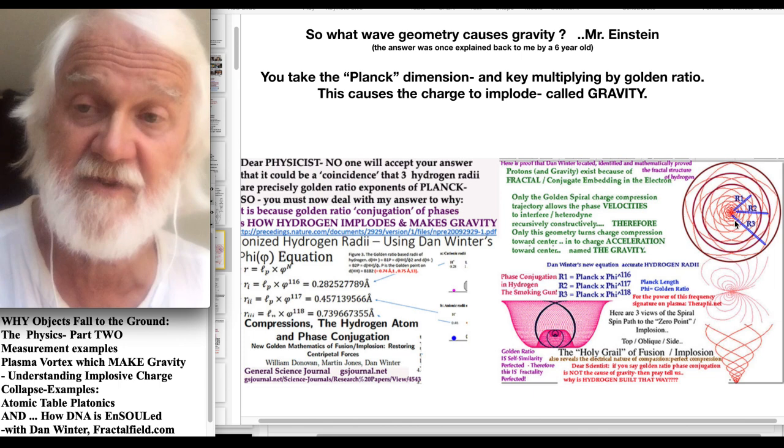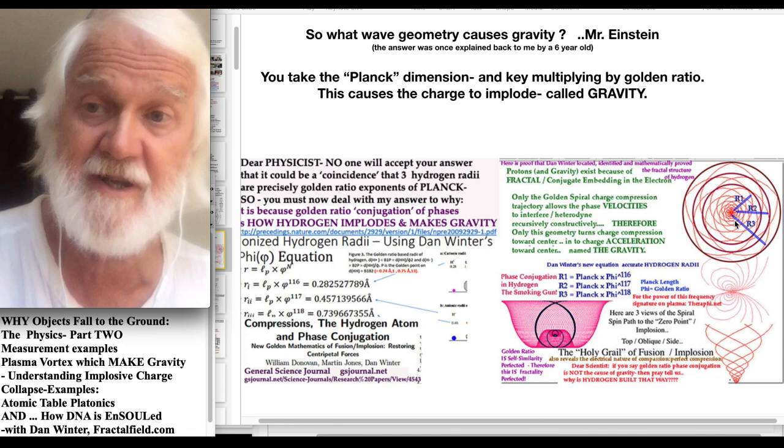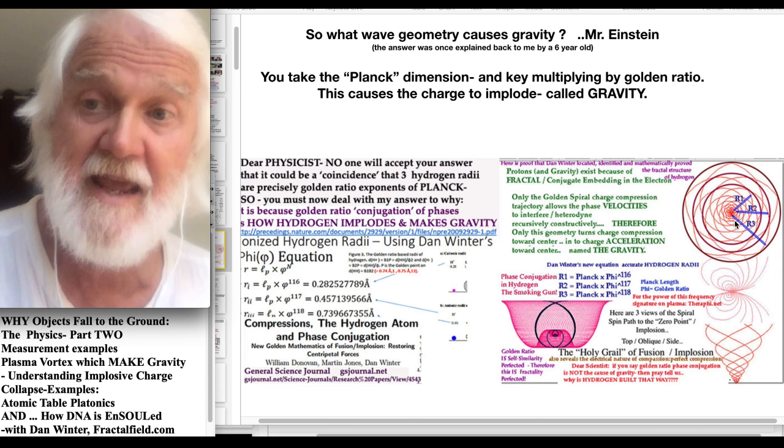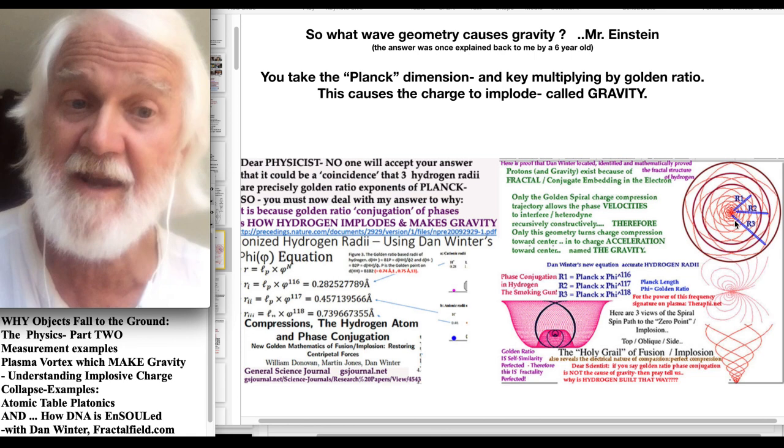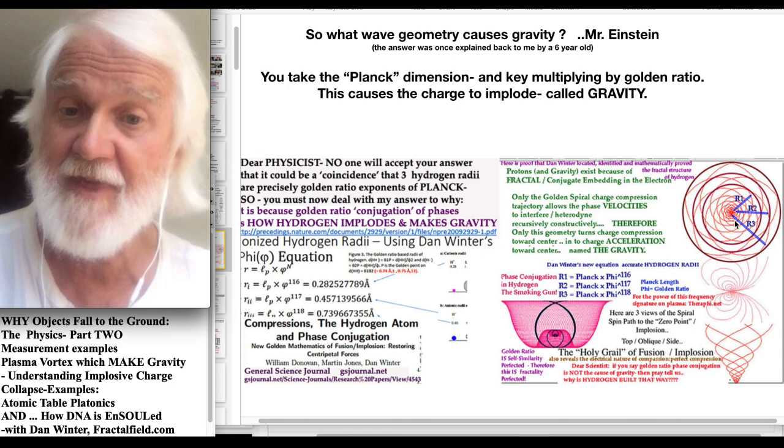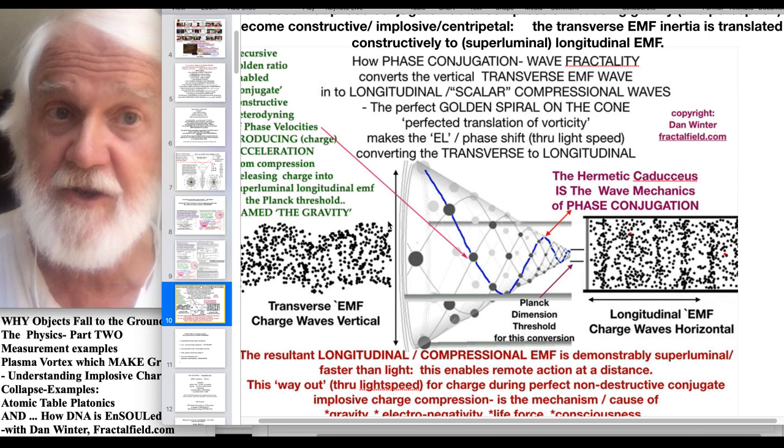As the charge is then accelerated in fractal compression toward center, that acceleration of charge toward center due to fractal conjugation is named the gravity and the proof that we've done. And then by that solved Einstein's dilemma of infinite non-destructive charge collapse is where then the charge doth go when it passes through center.